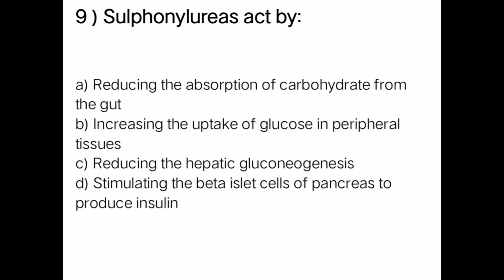Next question: sulfonylureas act by — option A: reducing absorption of carbohydrates from the gut; option B: increasing uptake of glucose in peripheral tissue; option C: reducing hepatic gluconeogenesis; option D: stimulating the beta islet cells of the pancreas to produce insulin. Right answer is option D — stimulating the beta islet cells of the pancreas to produce insulin.